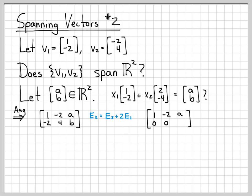I'll get a 0 here as well, because 4 plus 2 times -2 is 4 minus 4, which is 0. And then in this entry here, I'm going to get b plus 2a, because I'm applying this row operation to the second row. So we've done one row operation to work on our augmented matrix.